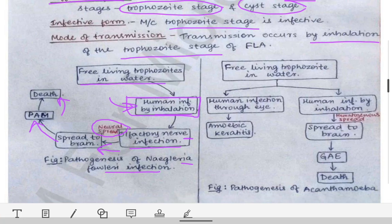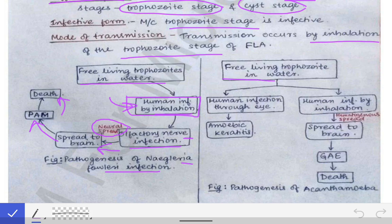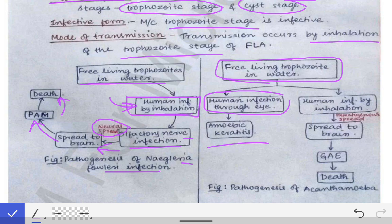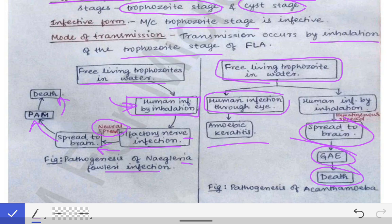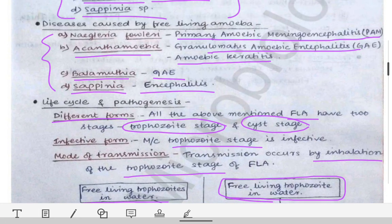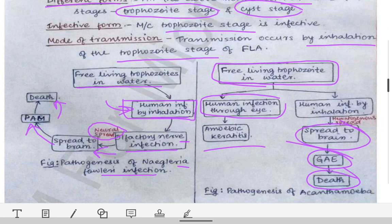For Acanthamoeba, free-living trophozoites are present in water. When a human swims in stagnant water, infection can occur through the eyes, causing amoebic keratitis. If the trophozoite is inhaled while swimming, the infection spreads to the brain — similar to Naegleria infection — causing granulomatous amoebic encephalitis, followed by death. Death is certain in all these cases, which is why these diseases are very important.